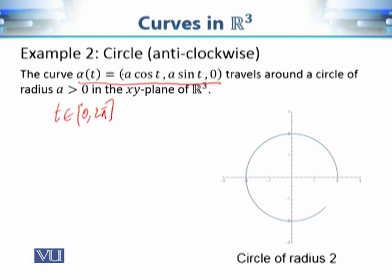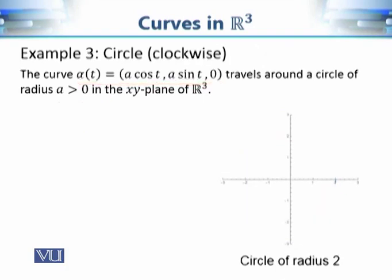Now the most important thing to observe about this function alpha is that we move in the anti-clockwise direction. So there are two important things involved in this definition of curve: first, the geometric shape, which is a circle, and second, the orientation. We can say this is basically the path of a moving object which is moving along a circle, but it also has a direction of motion, which is anti-clockwise.